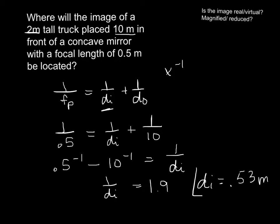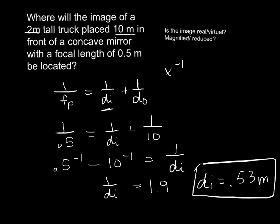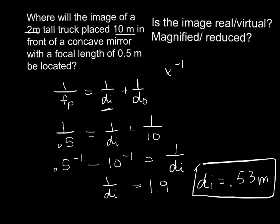So this is where we'll find our image. If we put a screen at 0.53 meters in front of, or 53 centimeters in front of our mirror, we should actually be able to see our car in the mirror, or actually on the screen. So is this image real or virtual? We know that it is real because it's positive. Since this is a positive 0.53 meters, this is a real image.